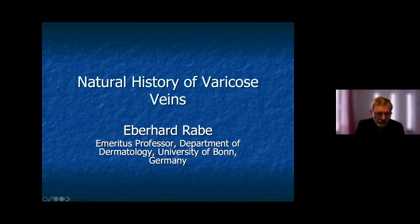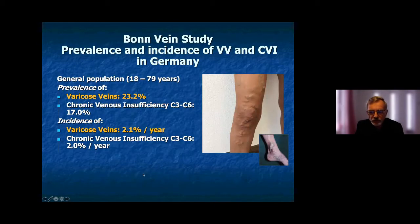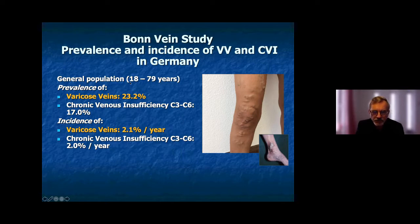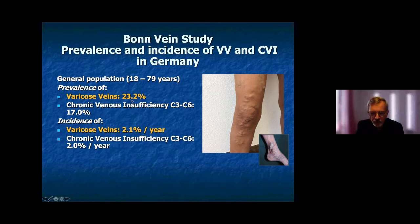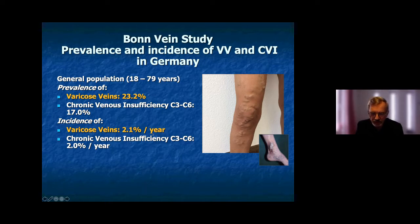Looking specifically at varicose veins, using data from the Bonn-Vein study in Germany in a general population aged 18 to 79 years, the prevalence of varicose veins is 23.2%. That means a quarter of our population has varicose veins, increasing with age. The incidence of varicose veins per year is 2.1%, which is also quite a high number.